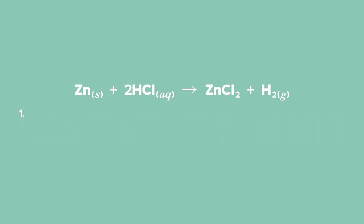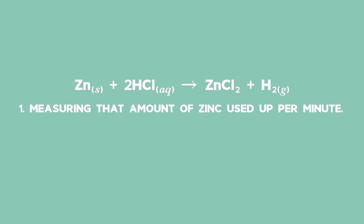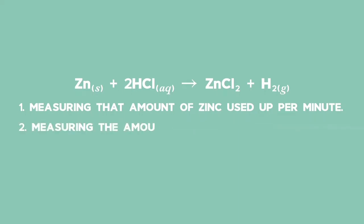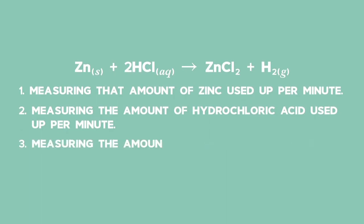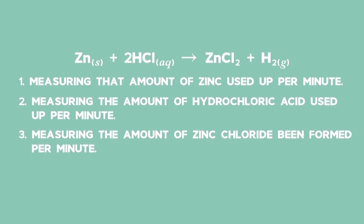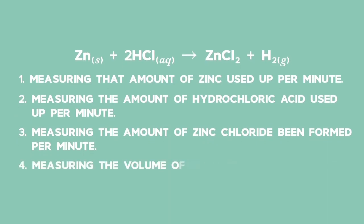Number one, measuring the amount of zinc used per minute. Number two, measuring the amount of hydrochloric acid used per minute. Number three, measuring the amount of zinc chloride being formed per minute. Number four, measuring the volume of hydrogen being produced per minute.